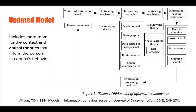Now that the person has had their information need activated and the situational context has been accounted for, we then face the intervening variables, which are essentially the elements of context that affect the person's information behavior either positively or negatively. Wilson categorizes them into psychological, demographic, role-related or interpersonal, environmental, and source characteristics — but you could basically organize these however you like, depending on how you prefer to account for all aspects of context.